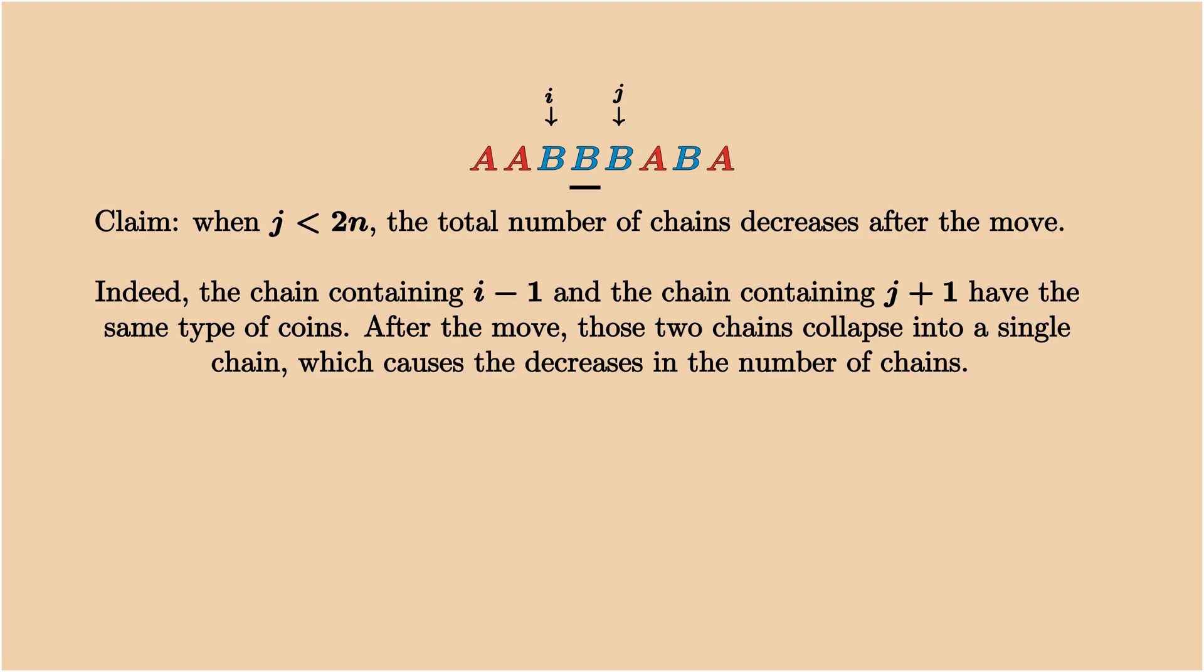Now, since they have the same type of coins, after the move, those two chains are put together, collapsed into a single chain. This is why the condition j smaller than 2n guarantees the decrease in the number of chains.